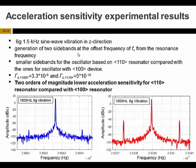We apply a 61.5 kHz sine wave vibration in the z-direction, which is normal to the plane of our resonators. By applying this vibration, two sidebands are generated at the offset frequency equal to the vibration frequency from the resonance frequency of our resonators. For the 1-0-0 resonator, the sidebands are much larger than for the 1-1-0 resonator, meaning the 1-1-0 resonator is significantly less sensitive to external acceleration. The acceleration sensitivity for the 1-0-0 resonator is 10 to the minus 8, while for the 1-1-0 it is 10 to the minus 10 — an improvement of two orders of magnitude by rotating from 1-0-0 toward 1-1-0 orientation.